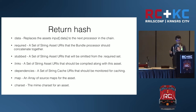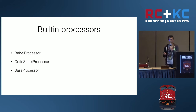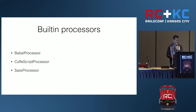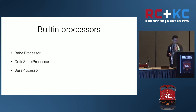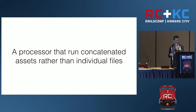We have some built-in processors, but I'll talk especially about three of them. The Babel processor takes ECMAScript 6 and compiles it to JavaScript code so your browser can run it. The CoffeeScript processor does the same thing with the CoffeeScript language, and the Sass processor does the same thing with stylesheets that use the Sass language.